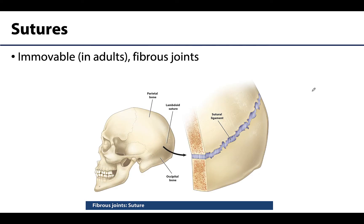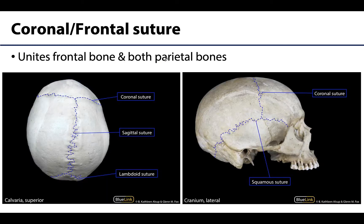Sutures are basically any area where two cranial bones will articulate. They form immovable — when we're talking about adults — and always fibrous joints. Not cartilaginous joints, not synovial joints, but fibrous joints. There are lots of sutures throughout the cranium, but we're going to focus on four main ones because these are usually the most dominant or easily visible.